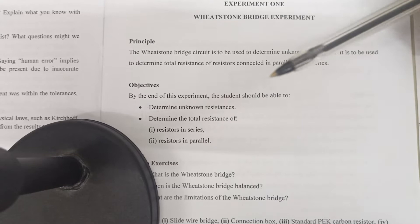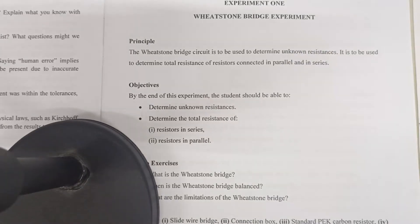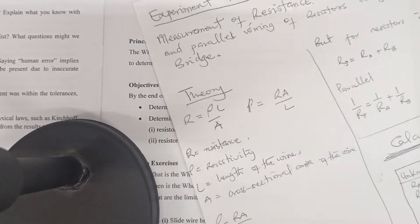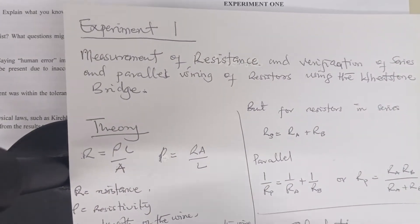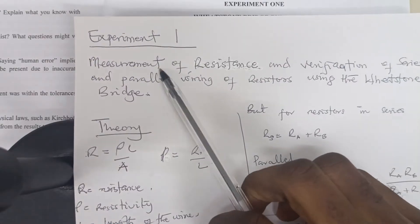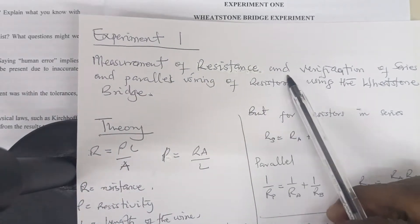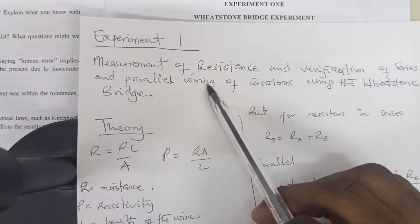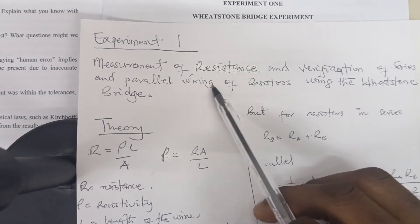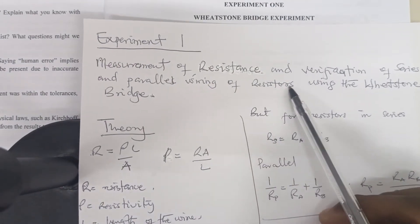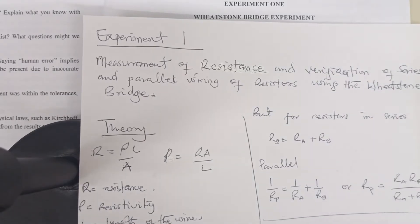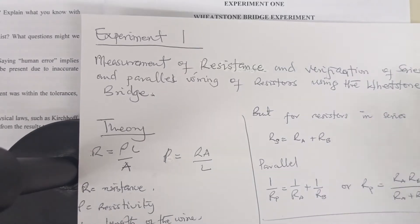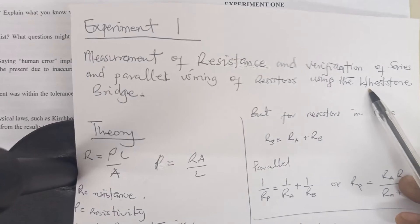How should we write our title? We can write it this way: 'Measurement of resistance and verification of the series and parallel wiring of resistance using the Wheatstone Bridge experiment' — or using the meter bridge. You can also say Wheatstone Bridge. So this should be the correct title of the experiment.